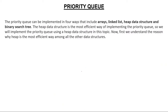Priority Queue can be implemented in four ways: using Arrays, using Linked Lists, using Heap Data Structure, and using Binary Search Tree. You may already know Arrays and Linked Lists. Heap Data Structure is the most efficient out of these four for implementing a Priority Queue. There are also many videos on Binary Search Tree available.